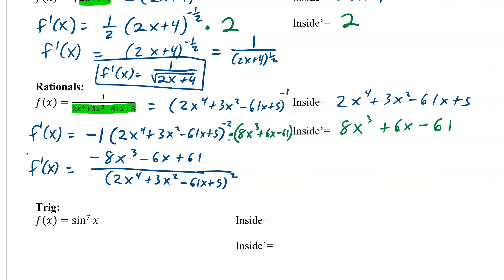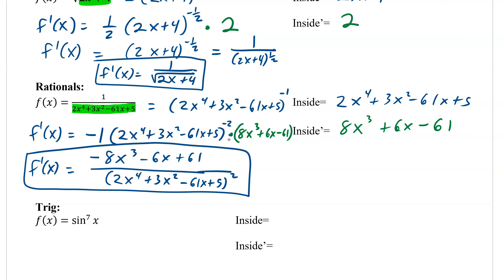This is a rational with just a polynomial on the bottom and nothing on top. If there were a constant on top, that's fine. But if there were an x on top, then you would have to use product rule or quotient rule — your choice — rather than chain rule alone.